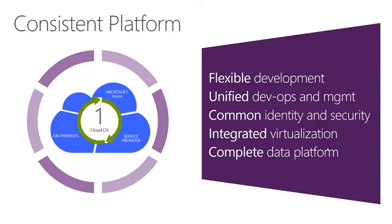This comes down to being consistent with our platform. You've probably heard our Cloud OS story — the idea of the Cloud OS covers three major areas: on-premises in a private cloud environment utilizing Windows Server Hyper-V and System Center; the service provider environment using the Windows Azure Pack creating plans; and finally the public cloud in Windows Azure. This consistent platform across all three environments gives us a flexible development environment with the same APIs, a unified management experience with common identity and security, and an integrated virtualisation platform.